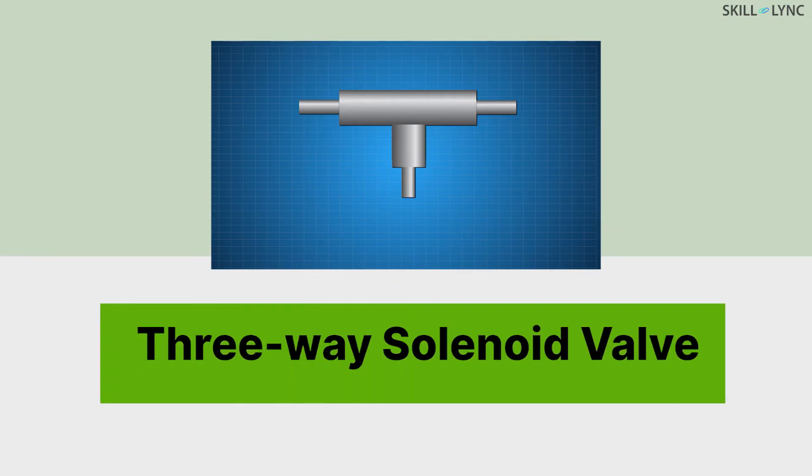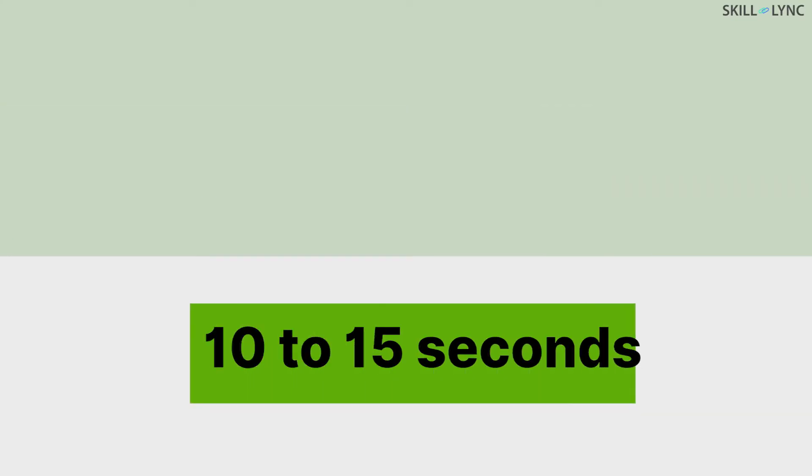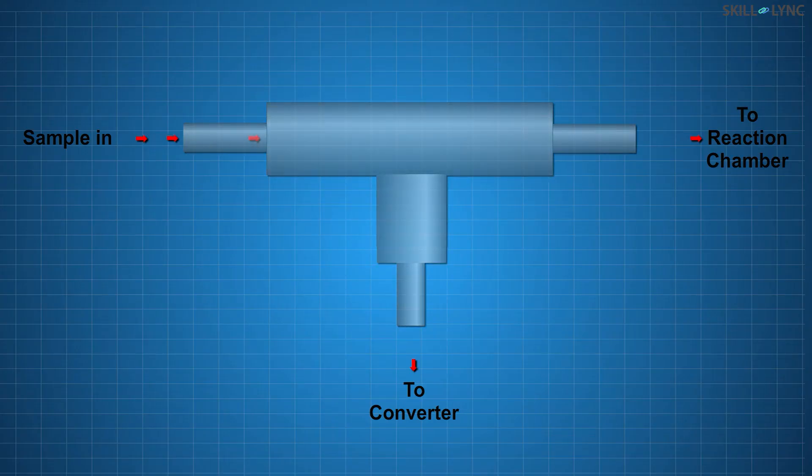Then, we have a three-way solenoid valve. One side of the valve receives the input sample gas. Of the other two sides of the solenoid valve, one is connected to the converter and the other is connected to the reaction chamber. The valve switches every 10 to 15 seconds for supplying the sample directly into the chamber and the converter, alternatively.